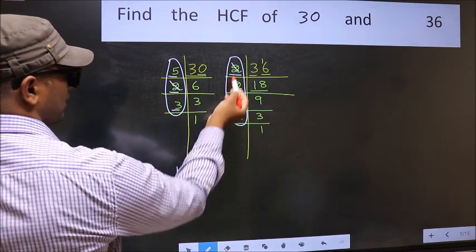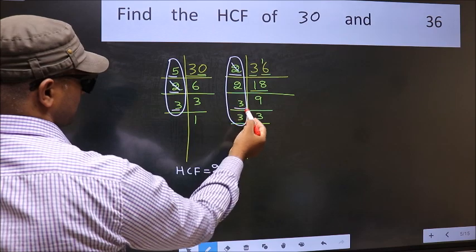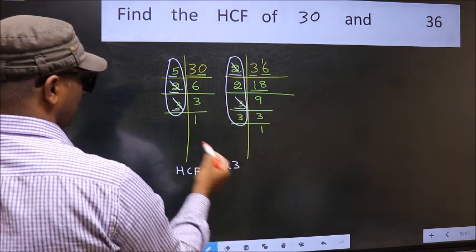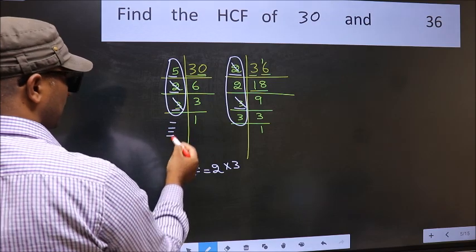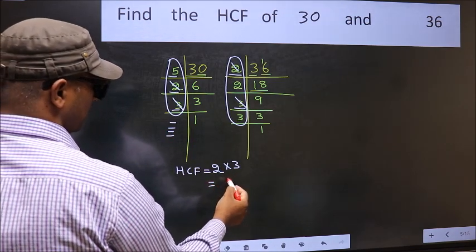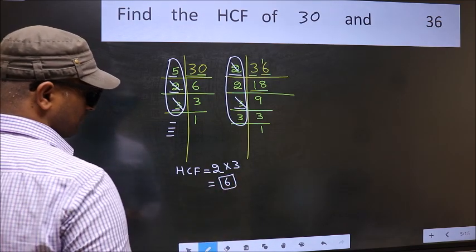Next number 3, do we have 3 here? Yes. So, cut 3 right here. No more numbers have been left out. So, our HCF is 2 into 3, 6 is our HCF.